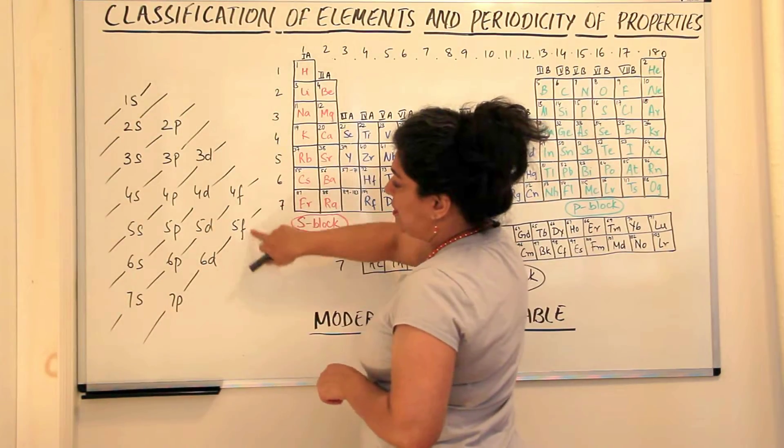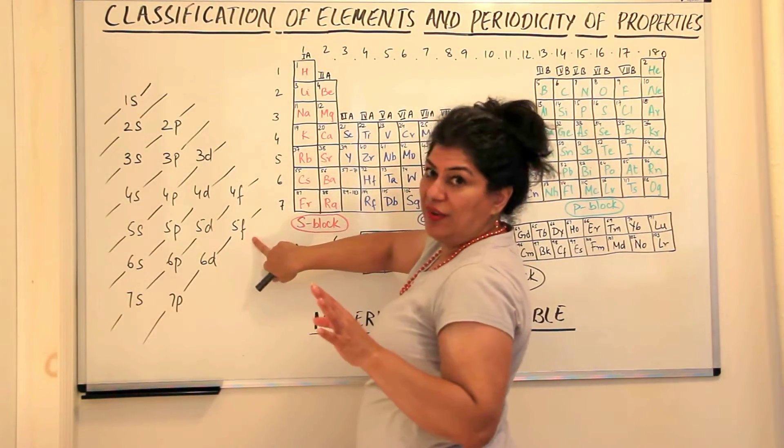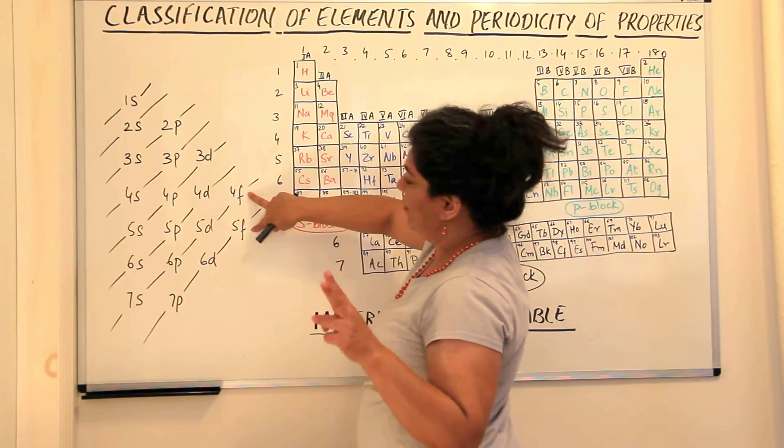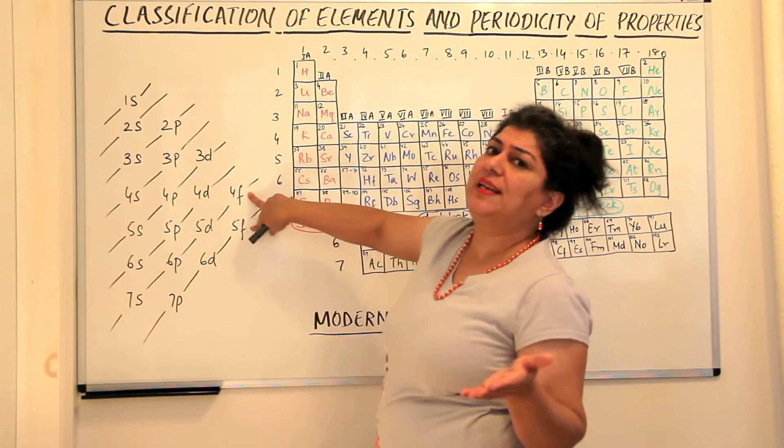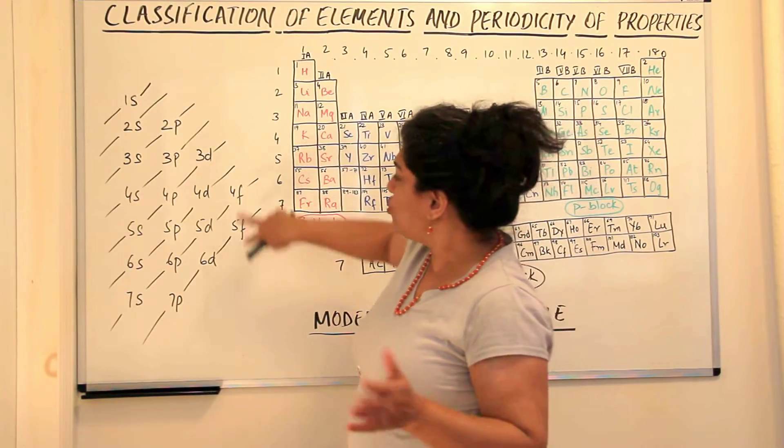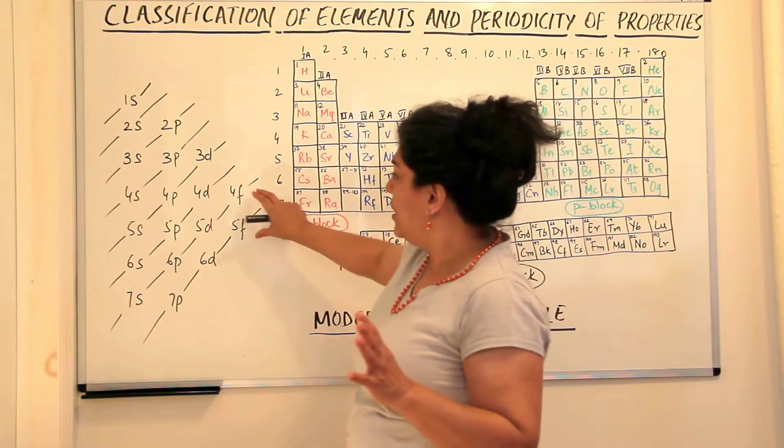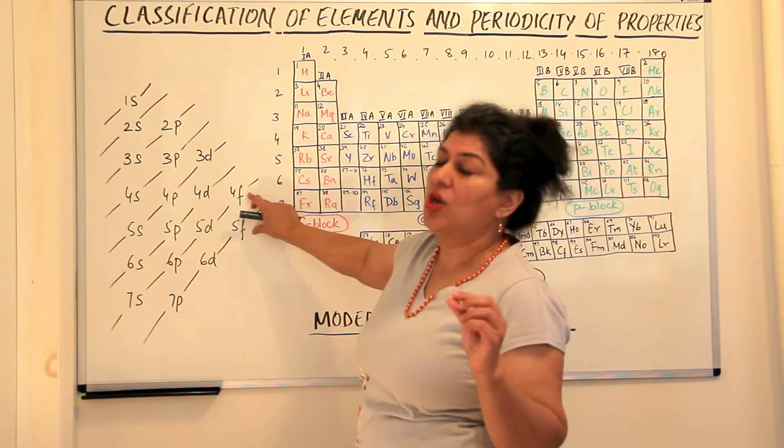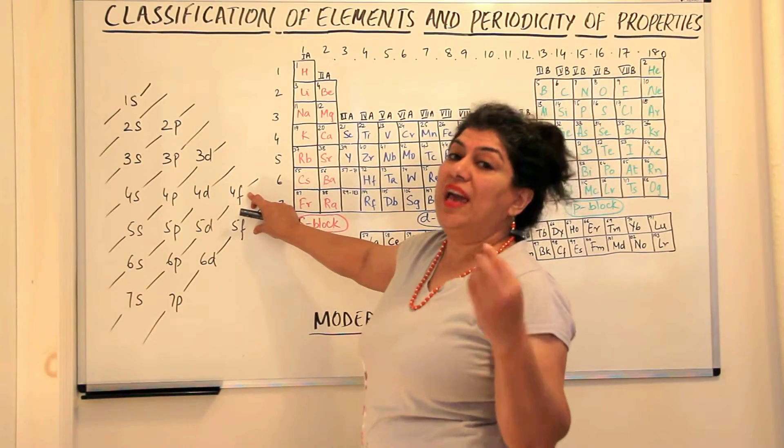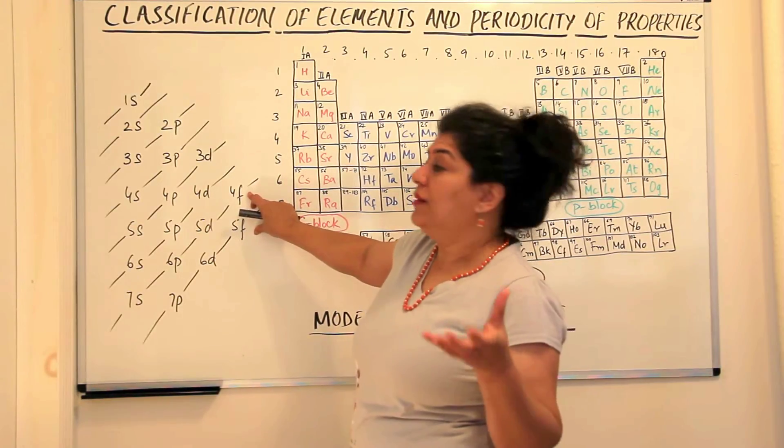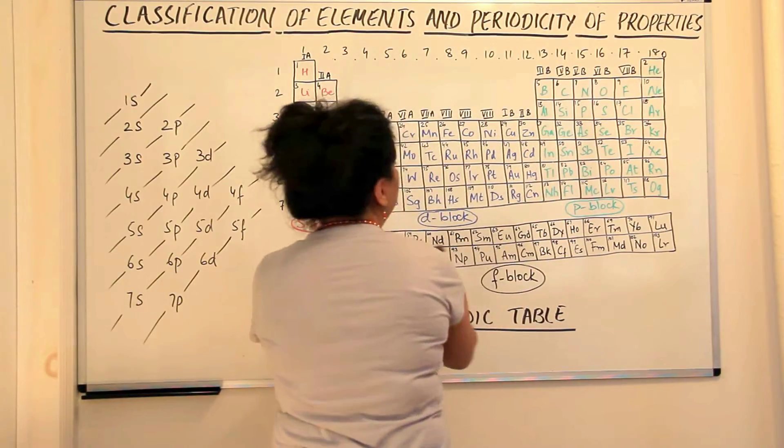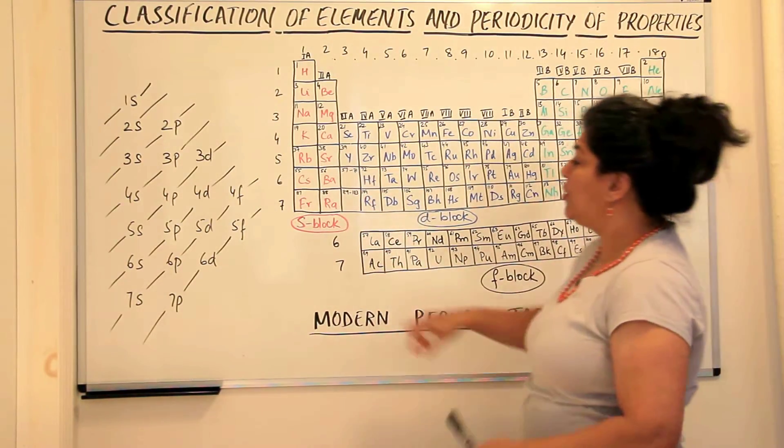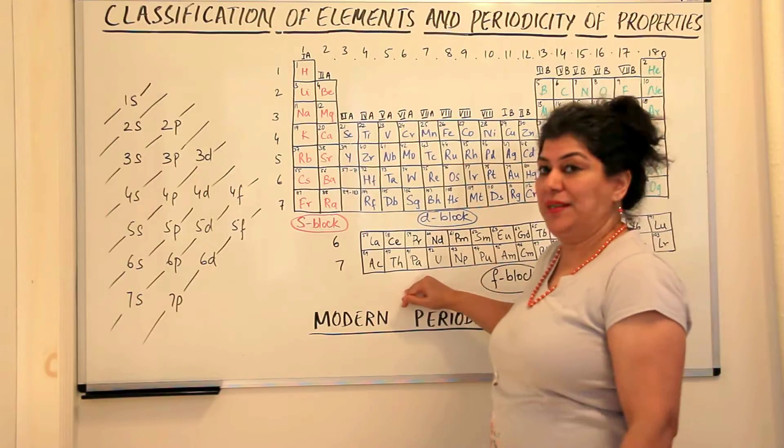Let us put these 14, the f block, there are only 4f and 5f orbitals. That is, there are only two of them which have to be filled in the presently known elements. So what did scientists do? They took 4f and 5f, these f block elements or elements in which the f orbitals are being filled up. The 14 elements were put here separately and these were called the f block elements.